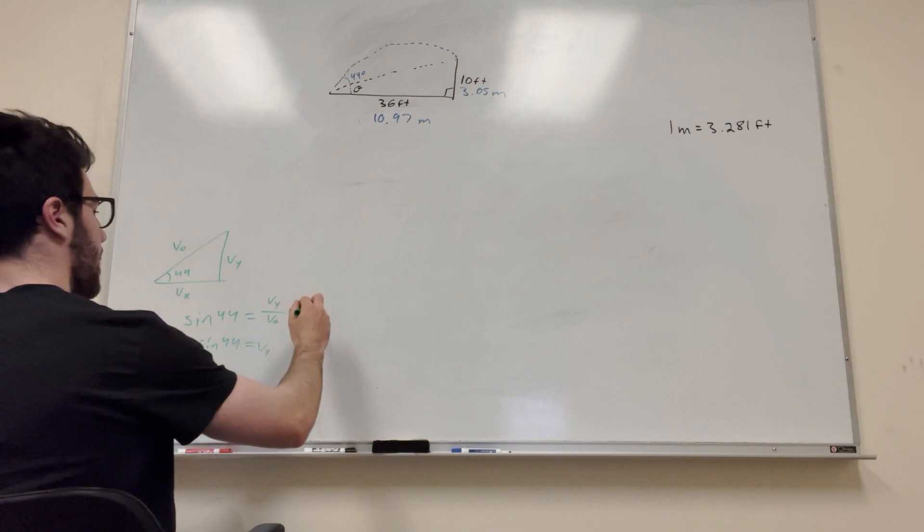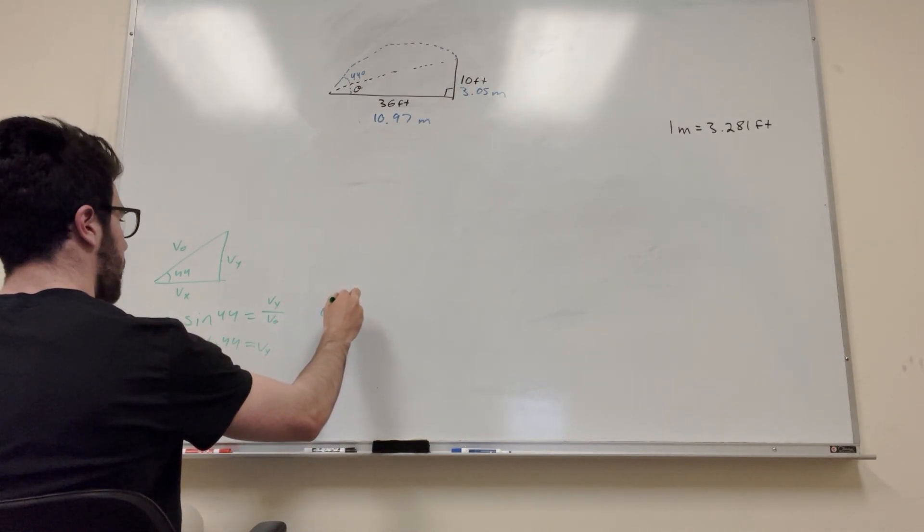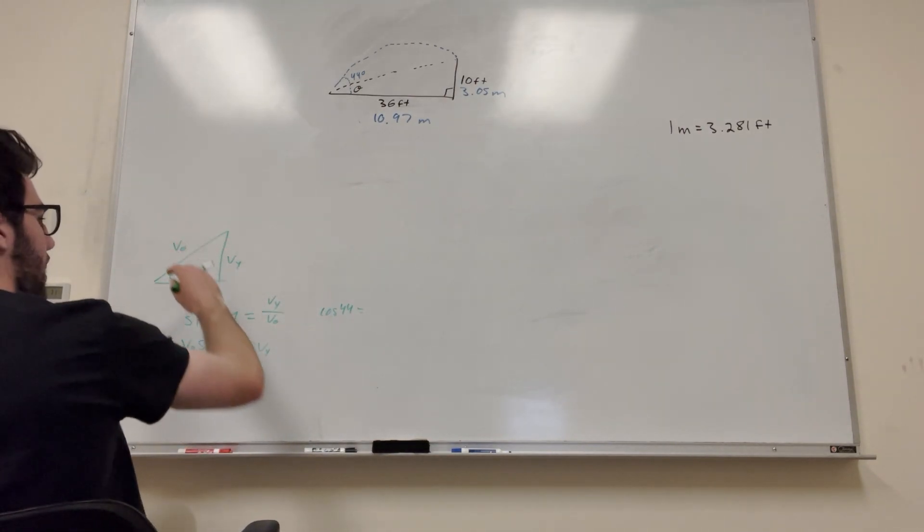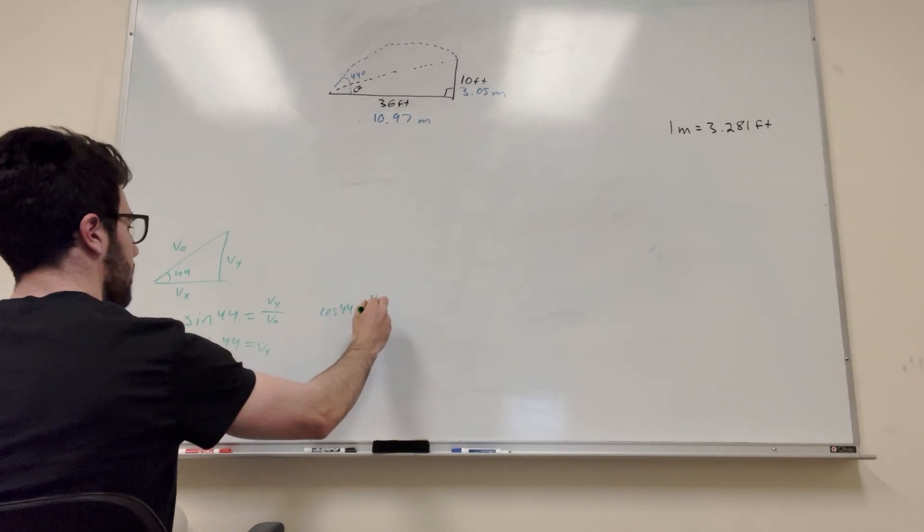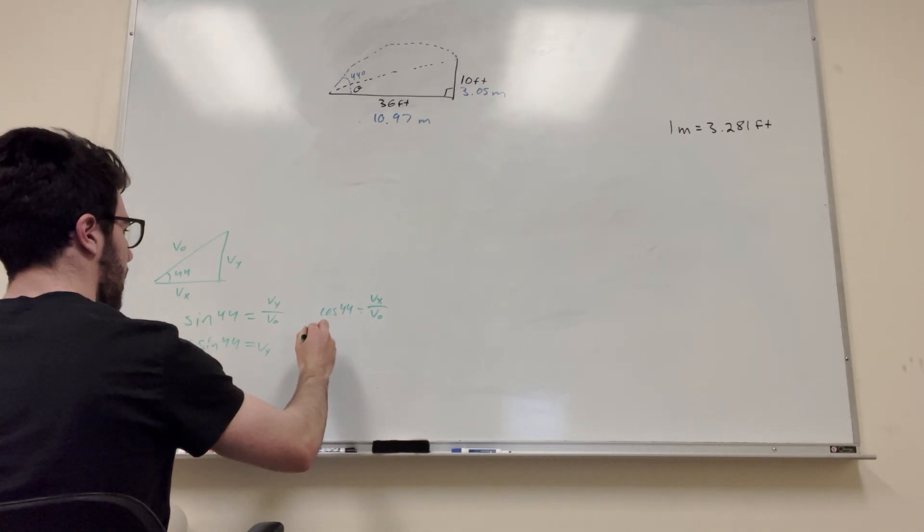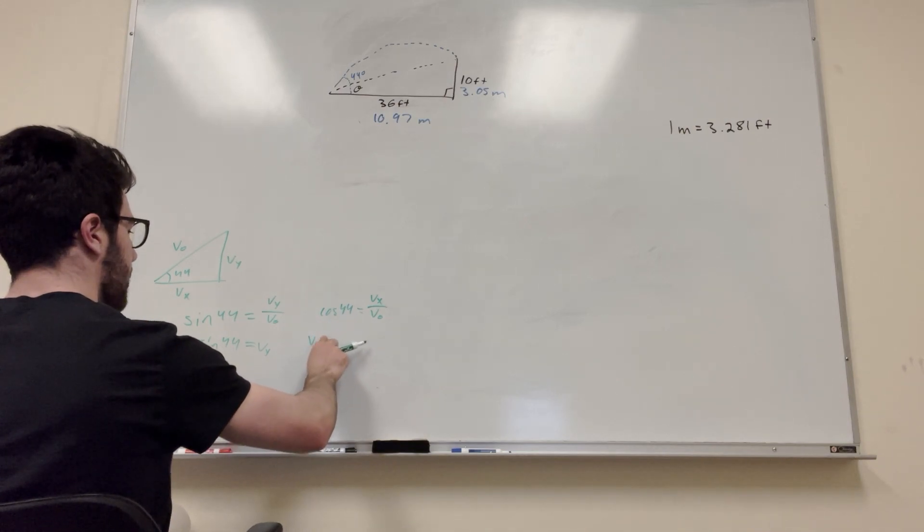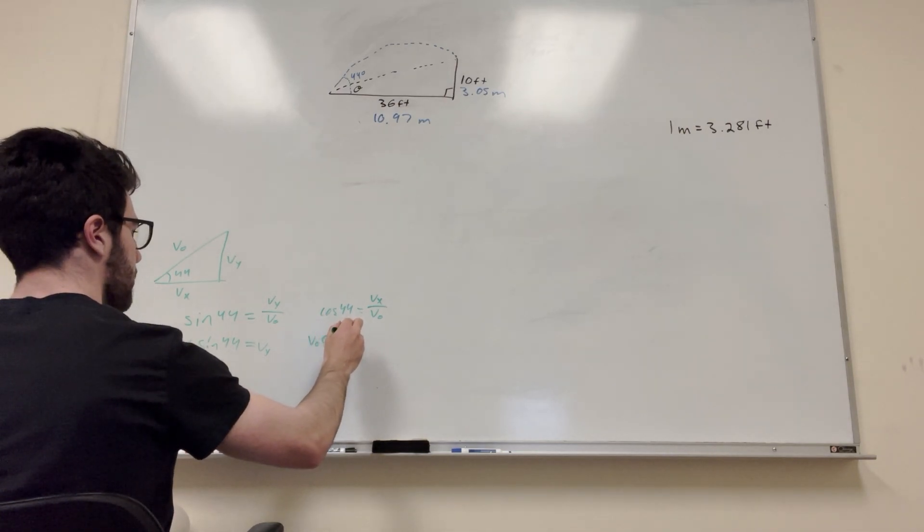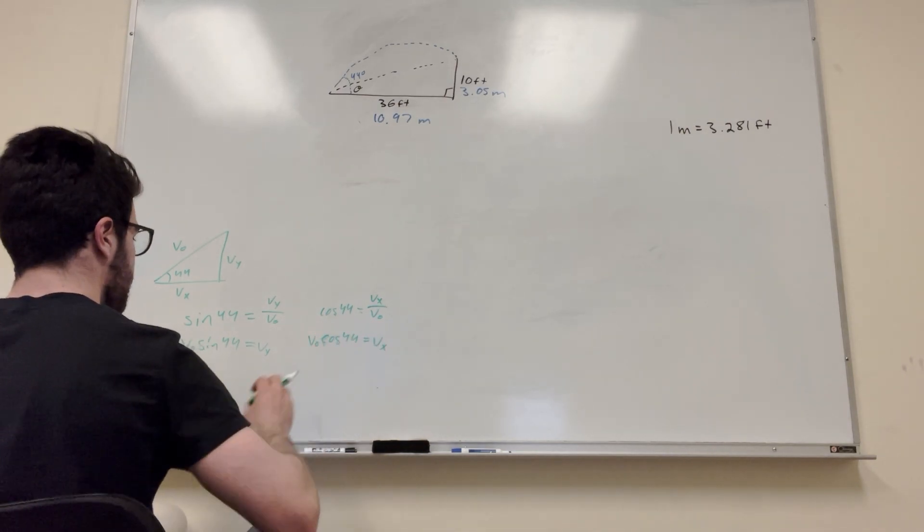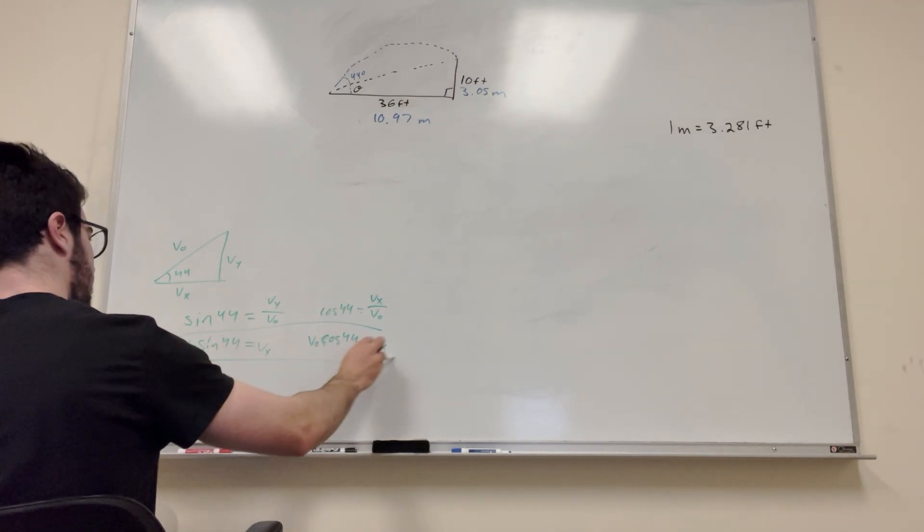Let's do it for the other one. So cosine of 44 is equal to adjacent over hypotenuse. So V of X over V-naught. Then we can move V-naught over. So V-naught cosine of 44 is equal to V of X. And these two equations are going to help us solve the problem.